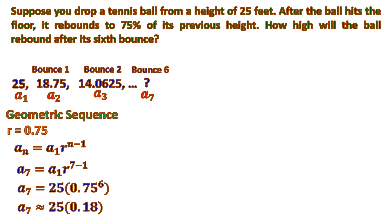We're going to round off to two decimal places. That's why, as you can see, we use the approximately equal to sign because we round it up. Then we multiply 25 times 0.18, so it's approximately equal to 4.5 feet.